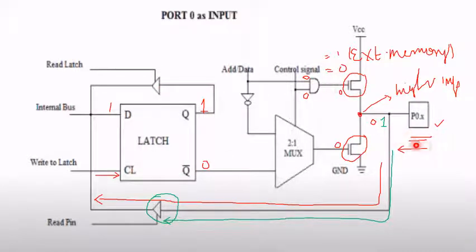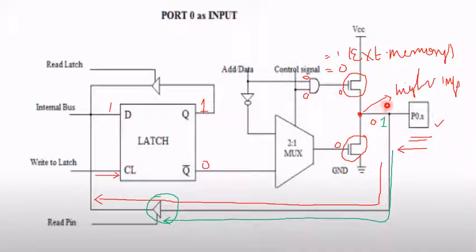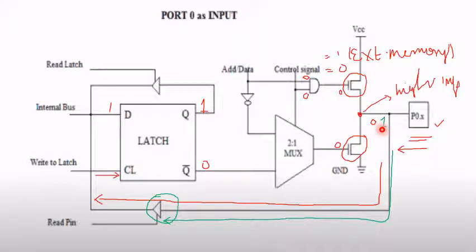Suppose if an analog-to-digital converter or a keyboard is connected to Port 0, and if the keyboard or ADC wants to give input to the port, since it is acting as an input port, if it wants to give an input of 0, it is going to overwrite the high impedance state, and that 0 is read through the read pin or through this buffer. Similarly, if the keyboard or ADC wants to give a 1 as input, it will again overwrite the high impedance state, and that 1 is read through this buffer.